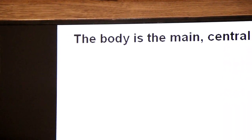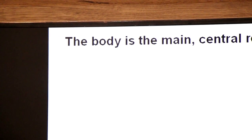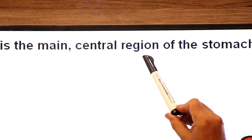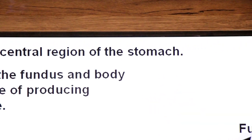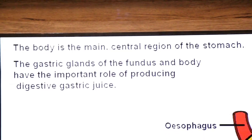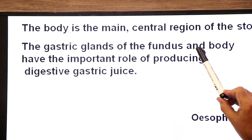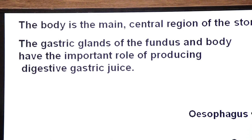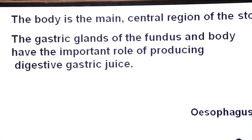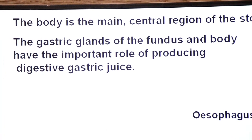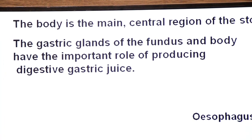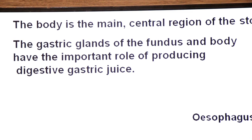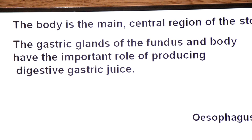The body is the main central region of the stomach. The gastric glands of the fundus and body have an important role in producing digestive juice, in which the key enzyme is first in its inactive precursor form — pepsinogen — and later converted into pepsin, the protein-breaking enzyme.